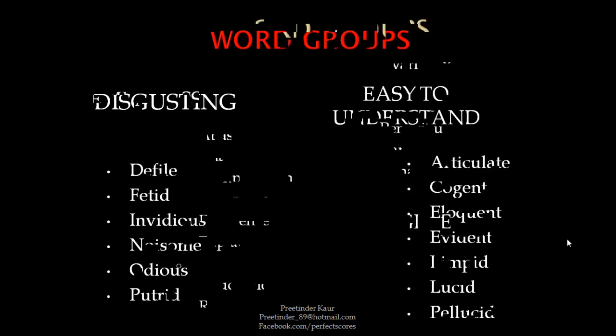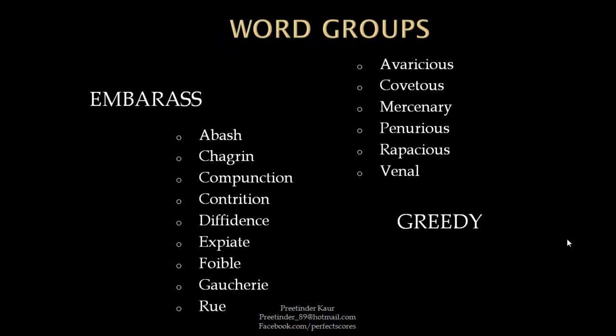The next word group is for embarrass. Words like abash, chagrin, compunction, contrition, diffidence, expiate, foible, gauchery, and rue come under this word group.